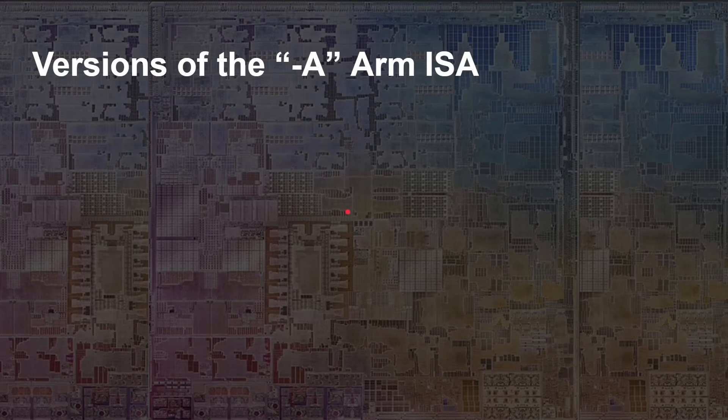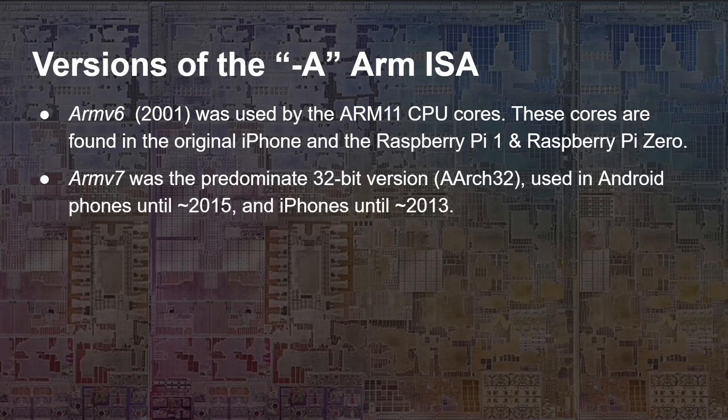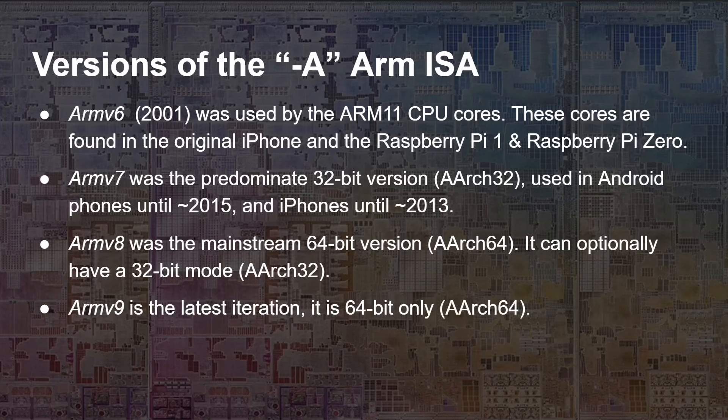Versions of the ARM ISA ending with '-A' denote application processors rather than microcontrollers. ARMv6 from 2001 was used in the original iPhone and the Raspberry Pi 1 and Pi Zero. ARMv7 was the major 32-bit version used in smartphones until 2015 for Android and 2013 for iPhone. Then ARMv8 arrived — a 64-bit version with an optional 32-bit mode. Now we're on ARMv9, the latest iteration, which is 64-bit only with no 32-bit mode.